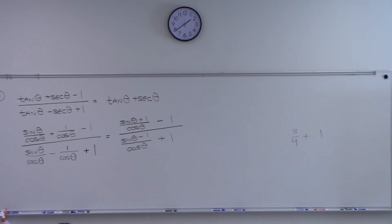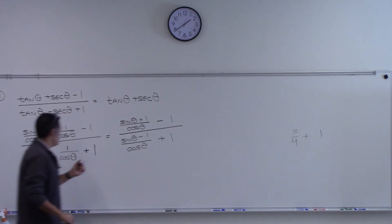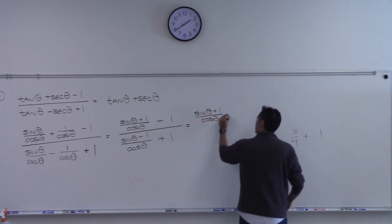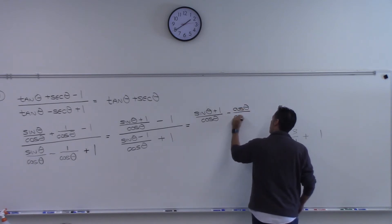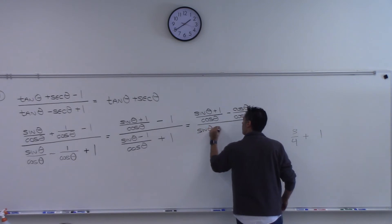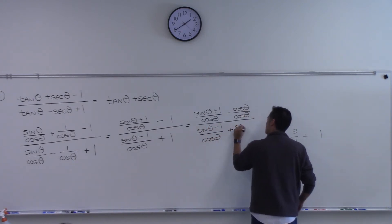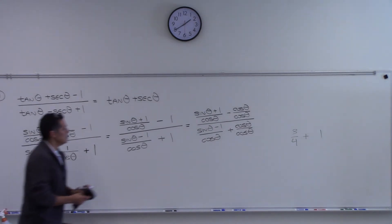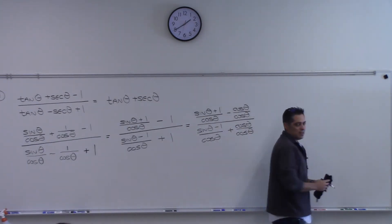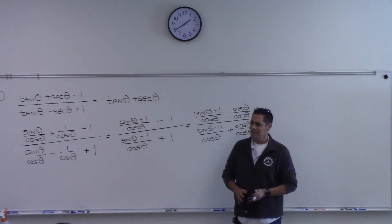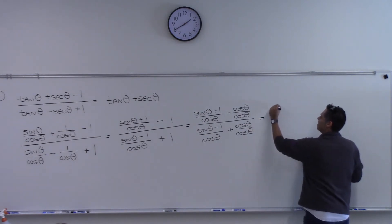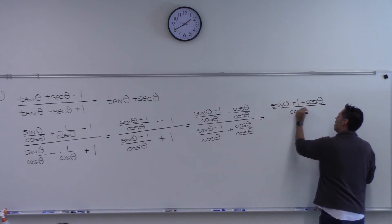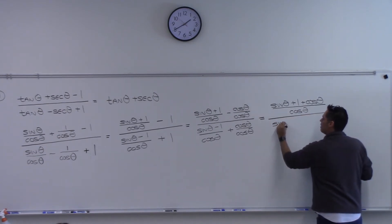So I'm going to rewrite this as: sine theta plus one over cosine theta, minus cosine theta over cosine theta — over sine theta minus one over cosine theta, plus cosine theta over cosine theta. Now I can put those two together because they have the same denominators. That gives: sine theta plus one minus cosine theta over cosine theta, over sine theta minus one plus cosine theta over cosine theta.